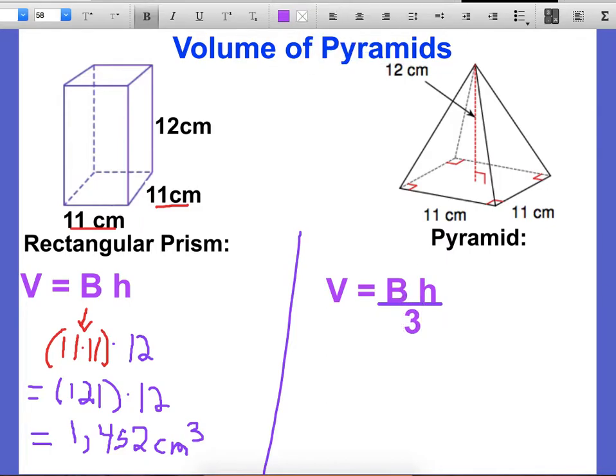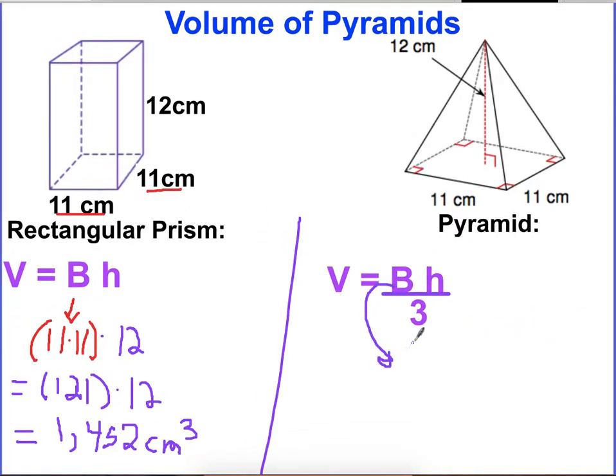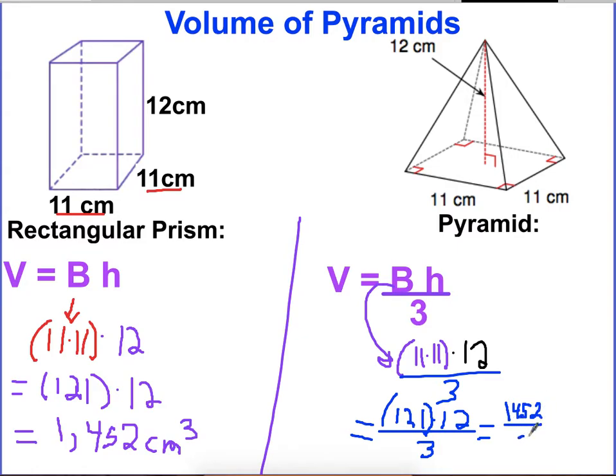So let's see how that works out and how it compares. Area of the base again, this will be 11 times 11. The base is still the same. And then times the height. So going straight up, that's 12. And then at the end, we'll divide by three. So 11 times 11 again is 121. When we multiply, we get 1452. And then we have this divided by three now. So at the end, we get 484. And it's going to be centimeters cubed.